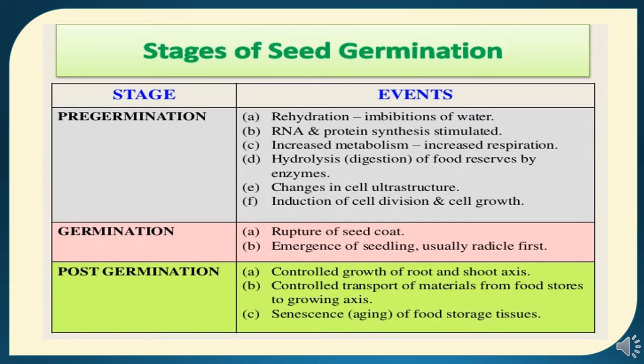Now, to study the stages of seed germination. The first is pre-germination stage, under which there are different events: first, rehydration, known as imbibition of water; second, RNA and protein synthesis stimulation; third, increased metabolism and increased respiration; fourth, hydrolysis, known as digestion of food reserves by enzymes; fifth, changes in cell ultrastructure; and sixth, induction of cell division and cell growth.